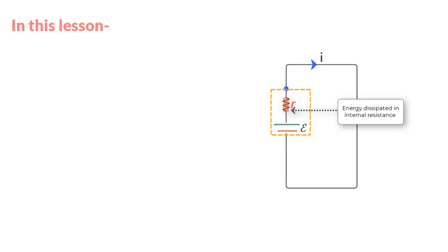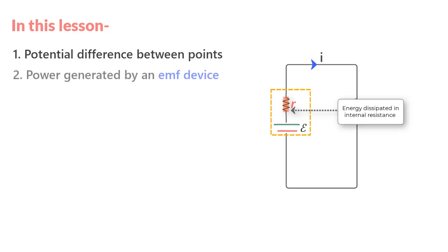Often when you attend problems around circuits, you are asked to find the potential difference between two points. So in this lesson, let us learn exactly that and we'll do so by taking a simple circuit and establishing the potential difference between any two randomly chosen points.